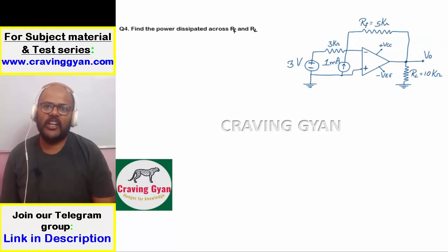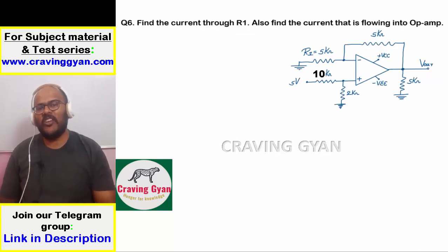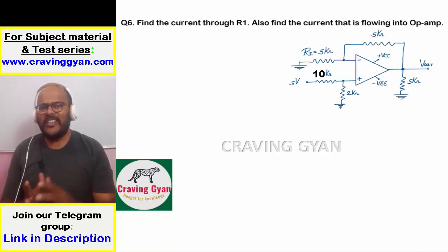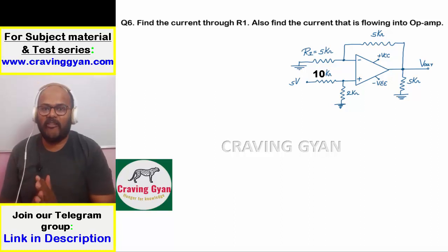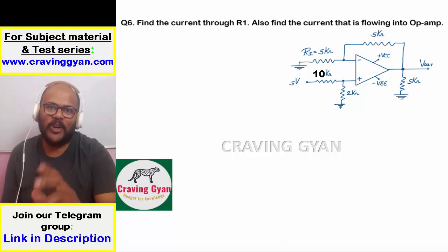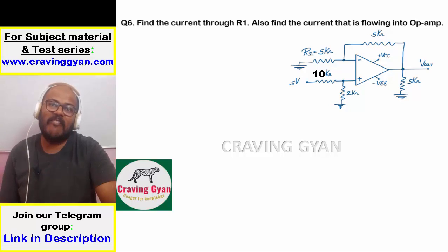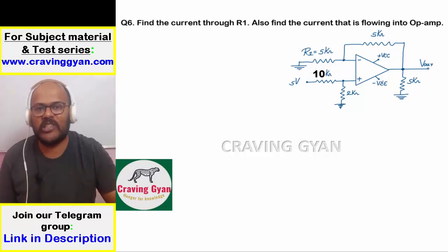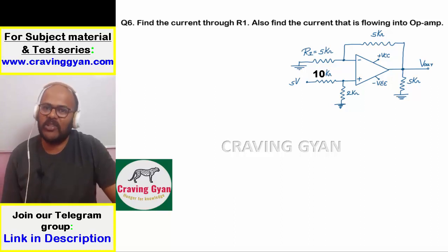In all six questions, I have made two assumptions: VCC equals 15 volts, and minus V equals minus 15 volts. These are the assumptions I've made for solving all problems.